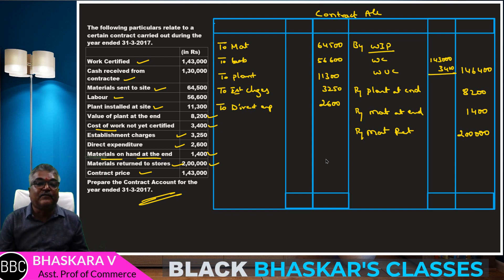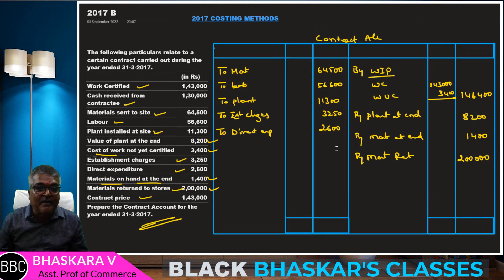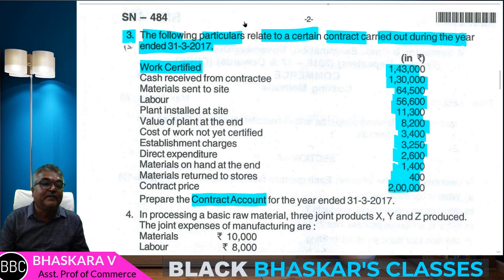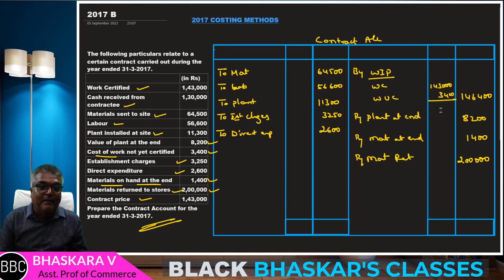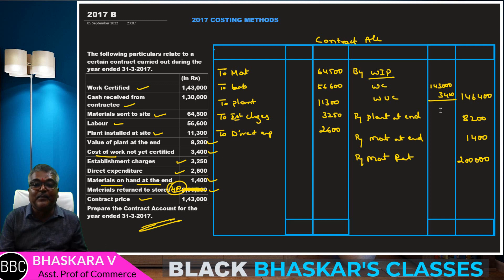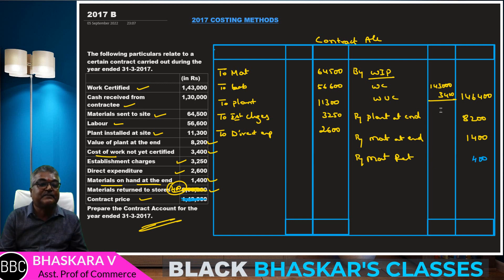Students, note carefully: in the question paper there is a printing mistake. Materials came in at 64,500 — it cannot be 2 lakhs returned. So materials returned to stores is actually 400 rupees, and contract price is 2 lakhs. Materials at the end is 1,400.